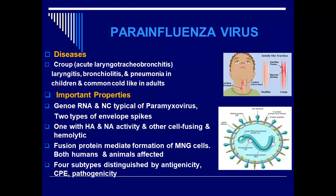The fusion proteins mediate the formation of multi-nucleated giant cells. Both animals and humans are infected with the parainfluenza virus, but the animal-region viruses are not able to cause disease in humans. There are four subtypes of the parainfluenza virus, distinguished based on antigenic potential, cytopathic effect on living cell culture, and pathogenic potential.